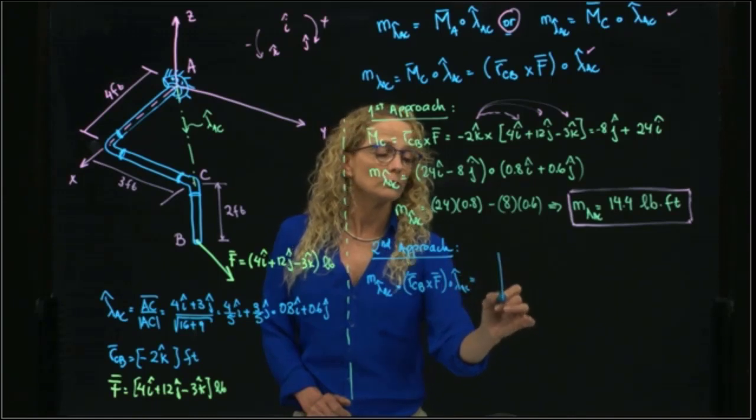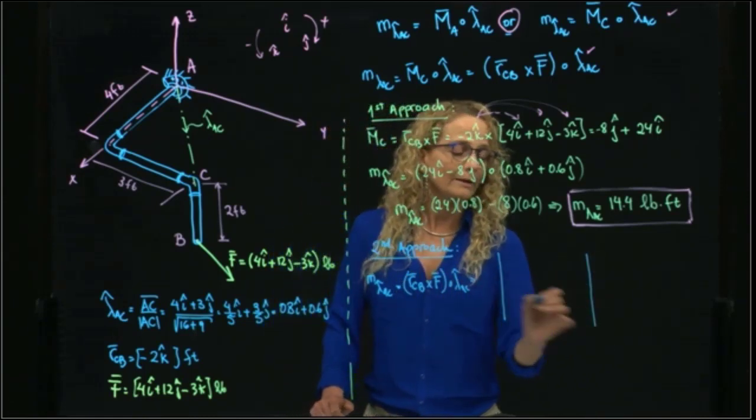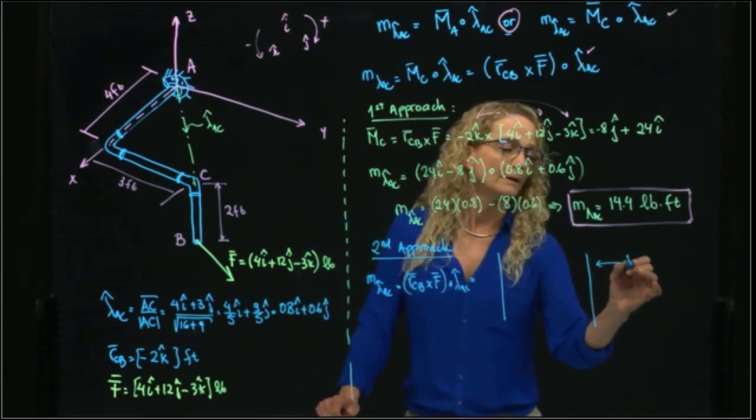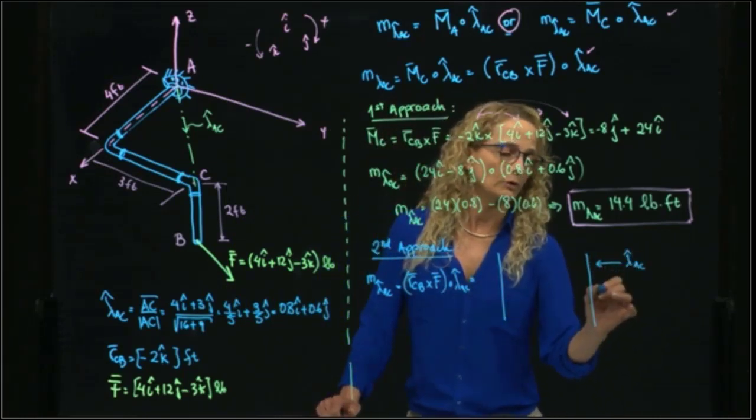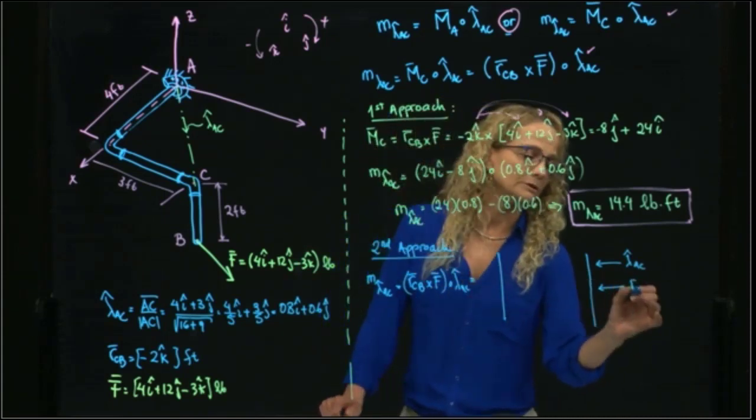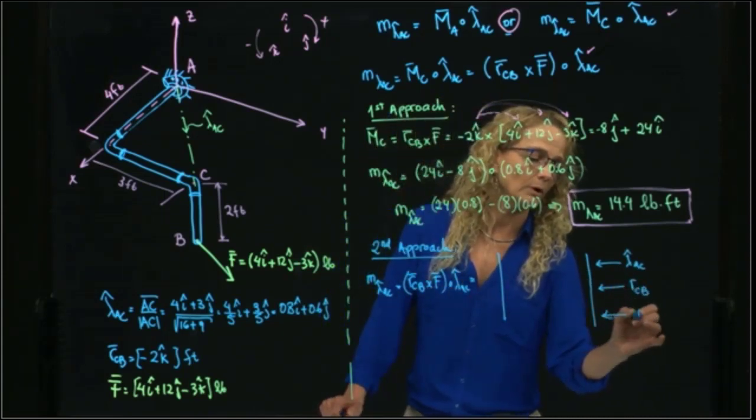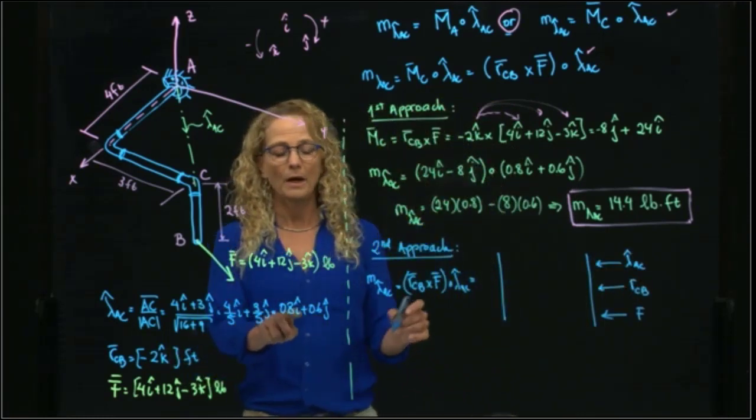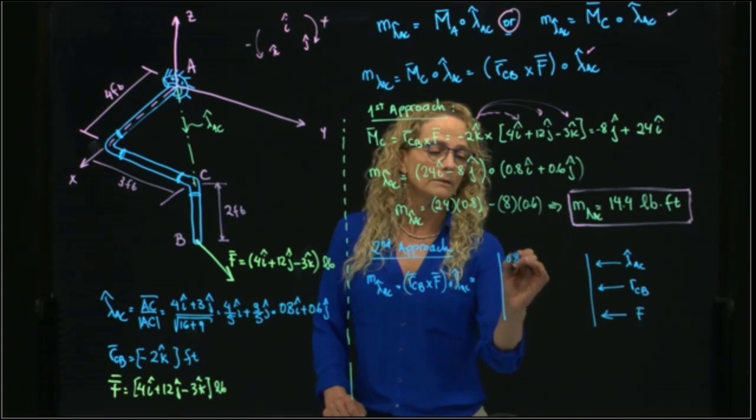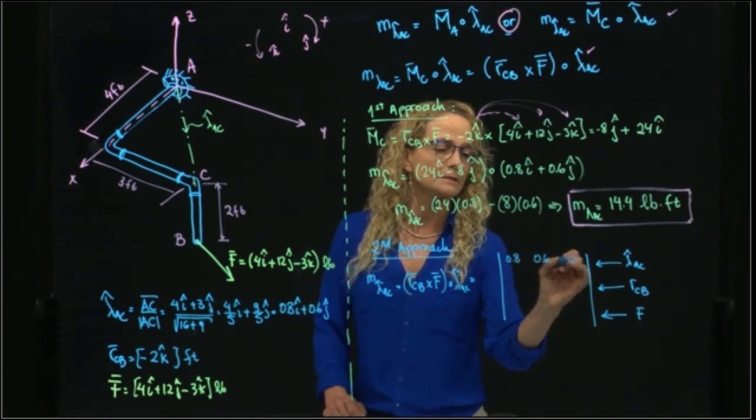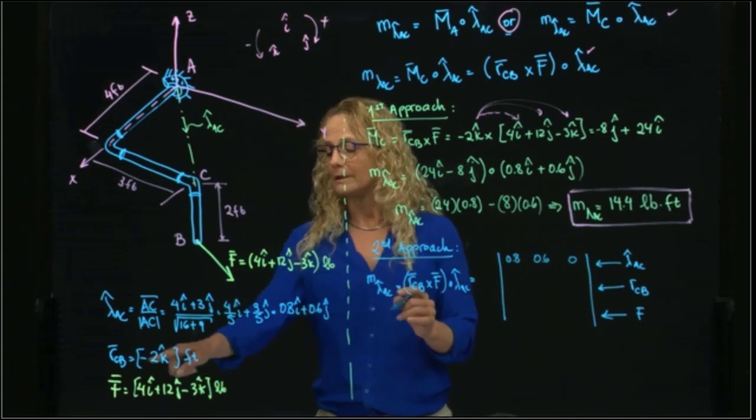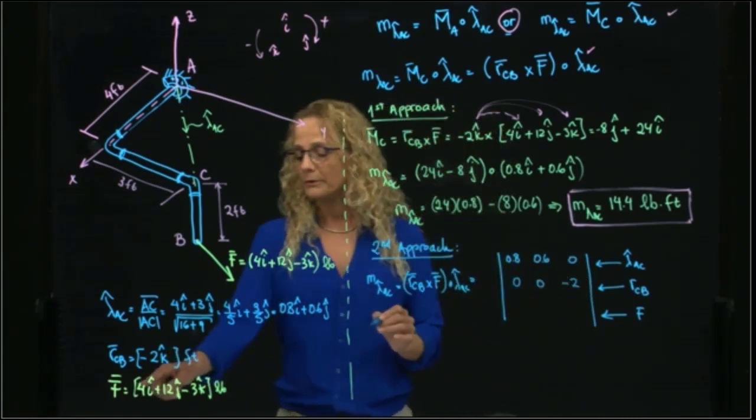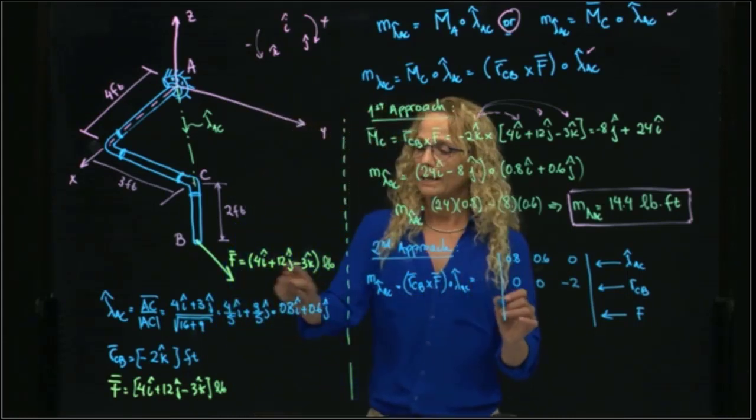But what I am going to do is do that in a matrix form. The first row will be my unit vector, the second row will be my vector CB, and my third row will be F. So my first row is this vector that I found, which is 0.8, 0.6, and 0. My second row will be negative 2k, and my third row will be the vector F.